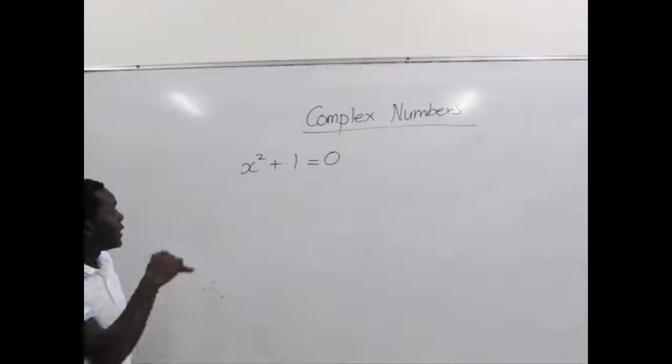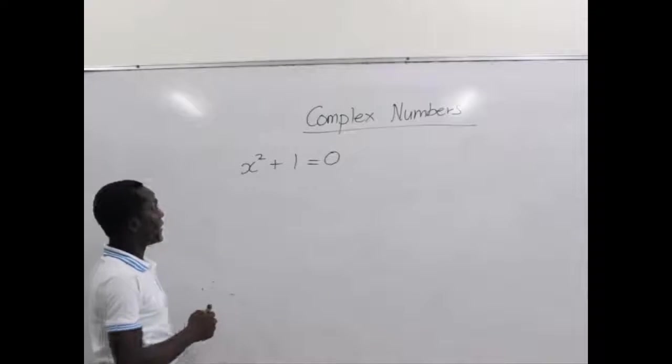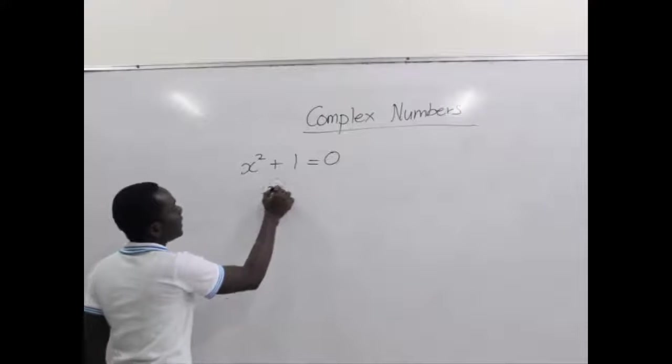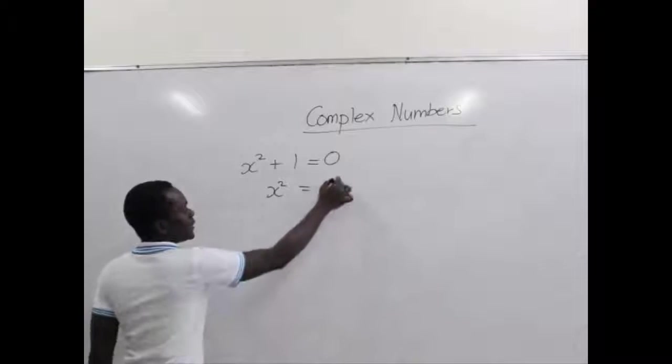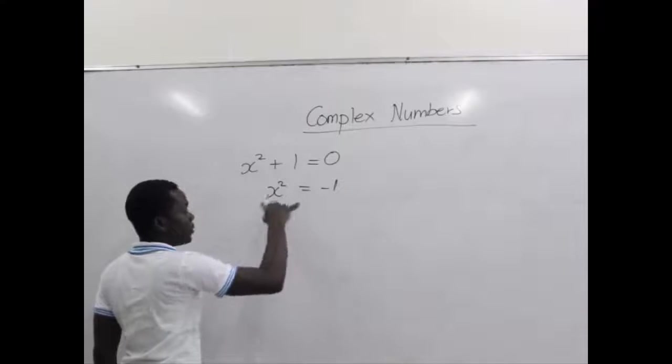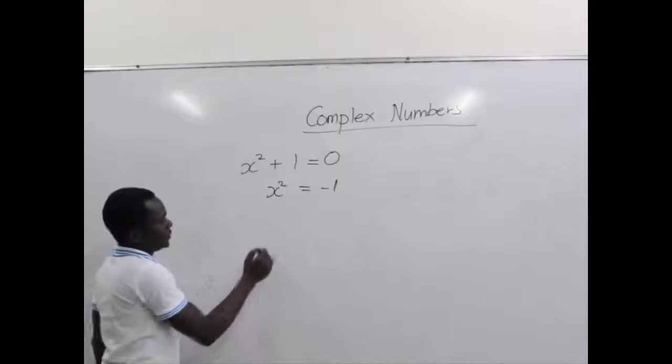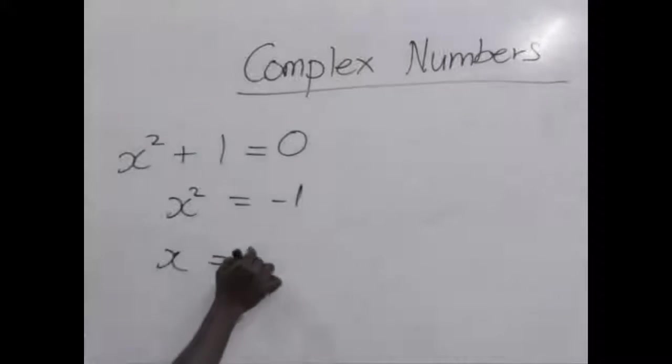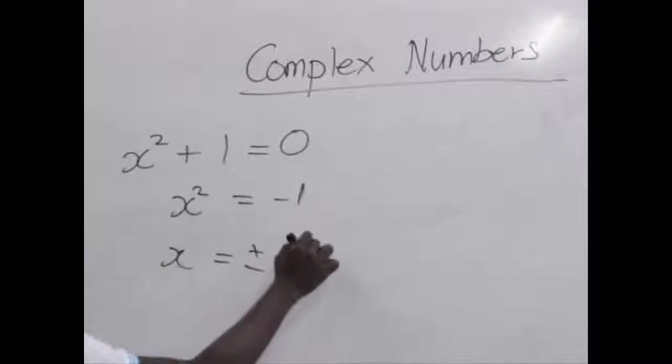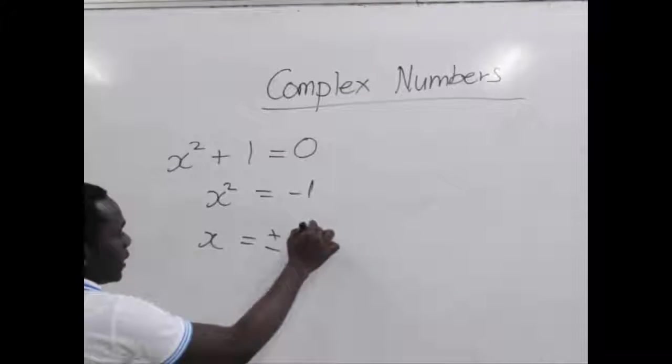So we went two steps further. That is, making x² the subject, given as x² = -1. Now to find x, we know we have to find the square root of negative 1.